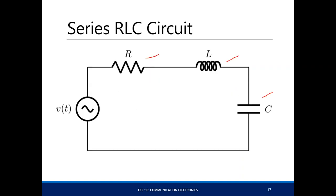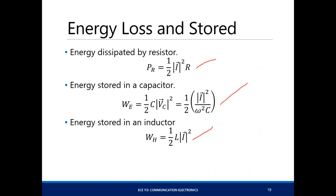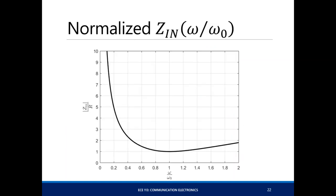The behavior of a series RLC circuit at resonance: it becomes a short circuit at resonance, meaning the impedance is at its minimum. Away from resonance, the impedance is greater. You can see from the graph that the center is your resonant frequency, and as you move further away from it, your impedance increases.